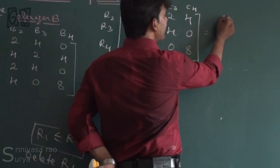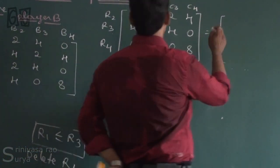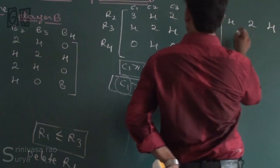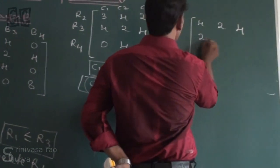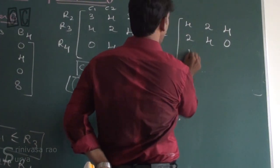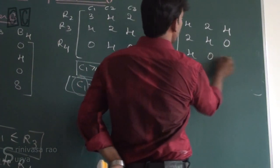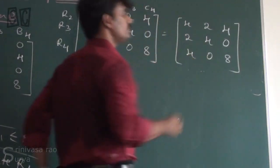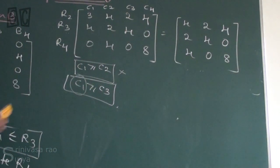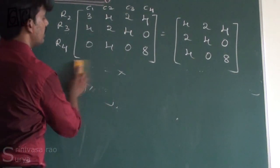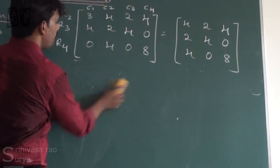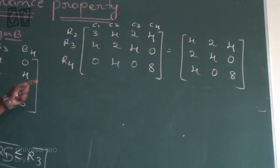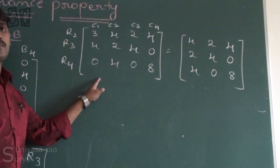After deleting C1, the remaining matrix is: R2 (4, 2, 4), R3 (2, 4, 0), R4 (4, 0, 8). Both row and column operations have been applied so far.